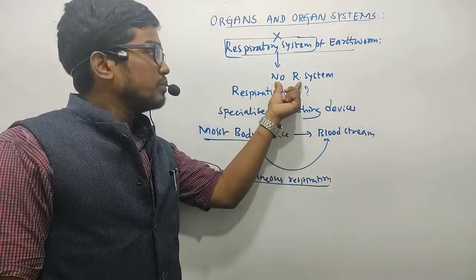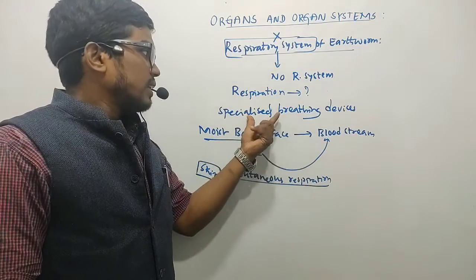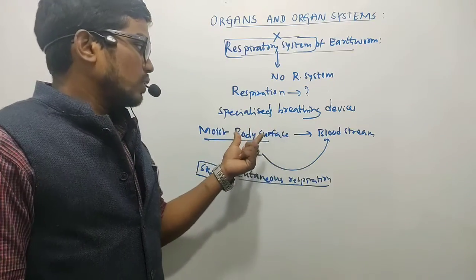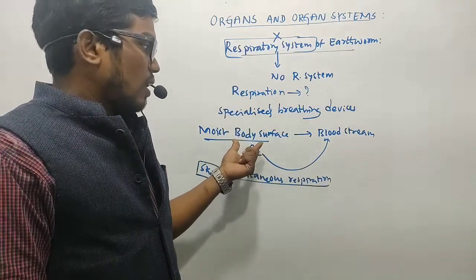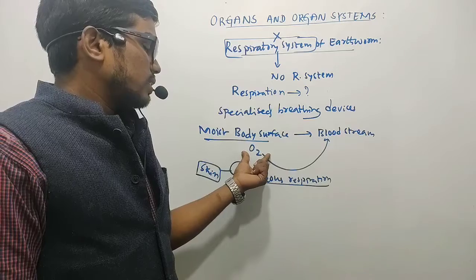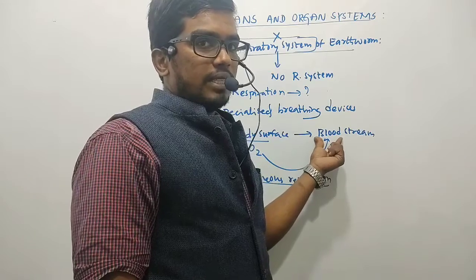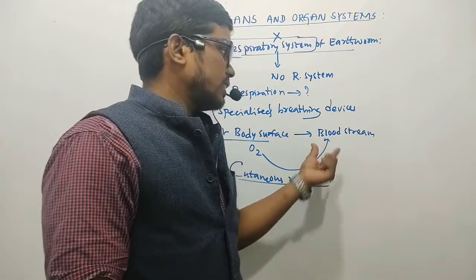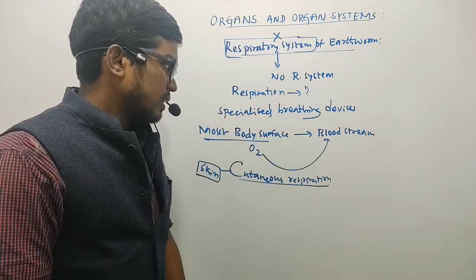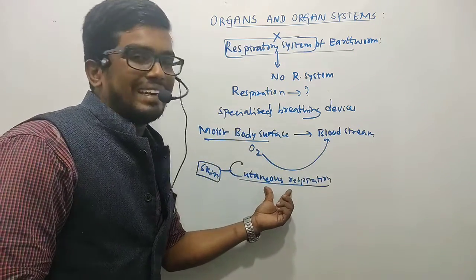To recap: the earthworm does not have specialized respiratory organs — the respiratory system is absent — but breathing devices are present on the body surface, which are connected directly to the bloodstream. They collect oxygen from the atmosphere and transfer it directly to the blood, which then transports oxygen for all metabolic and physiological activities. This respiration through skin is called cutaneous respiration.